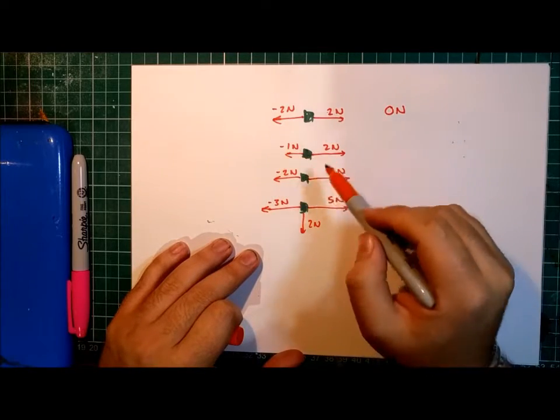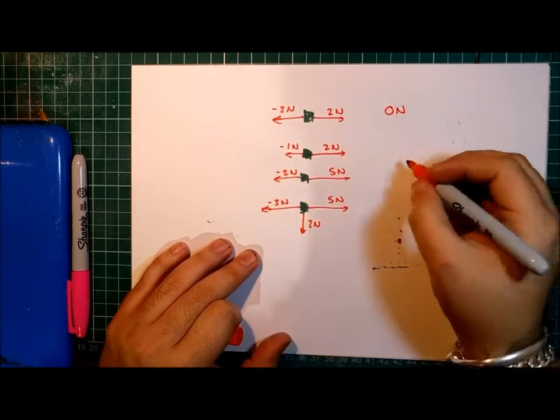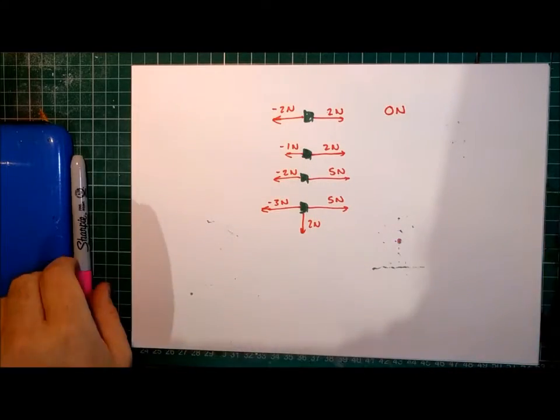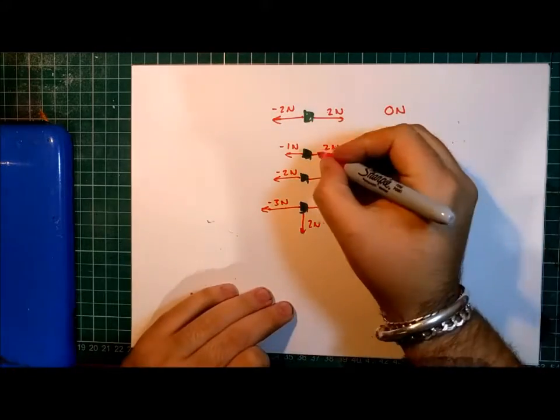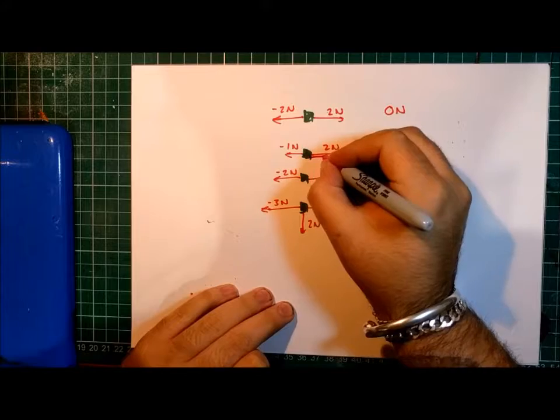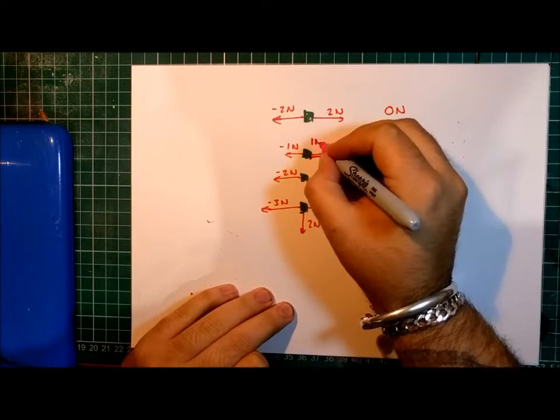The second one, minus one plus two, well, that leaves us with a resultant force of one. So, I need to draw that in. So, we have a resultant force here of one newton.